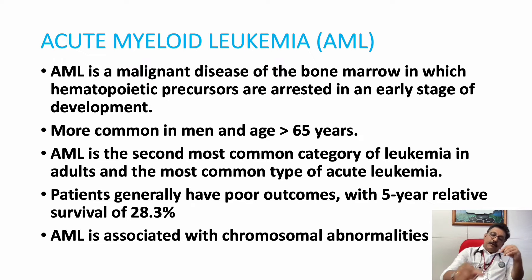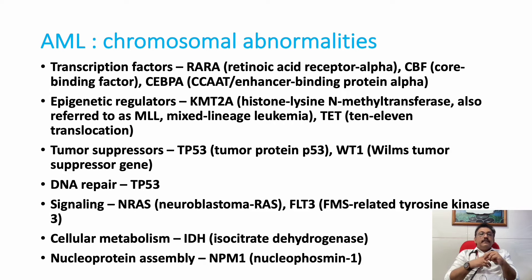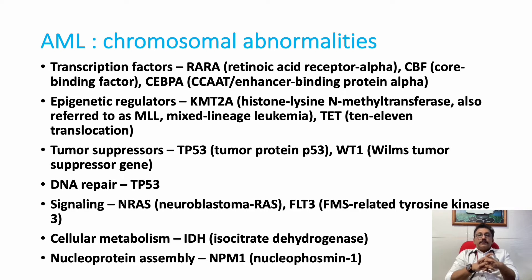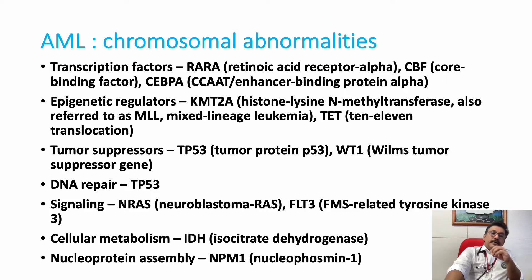AML is associated with varying chromosomal disorders. Some of the chromosomal abnormalities seen include transcription factors, retinoic acid receptor alpha, core binding factor, CCAAT enhancer binding protein alpha, histone lysine N-methyltransferase, 10-11 translocation, tumor protein P53 suppressors, WT1 tumor suppressor gene, and DNA repair TP53 mutations. We do not know which specific disorder causes AML, but these are the common chromosomal abnormalities seen in AML patients.